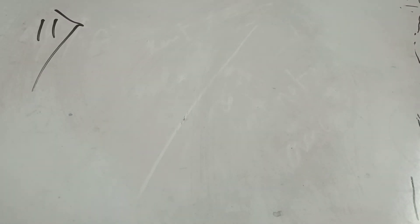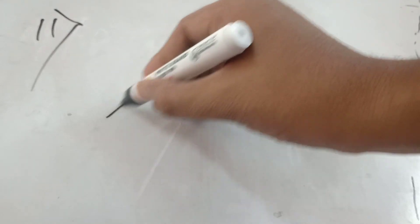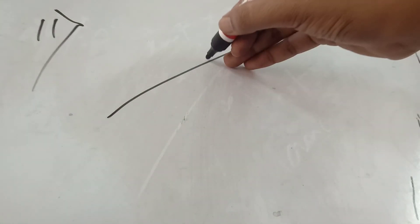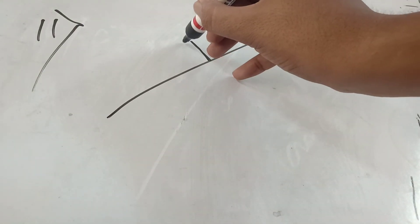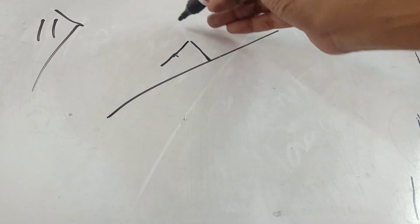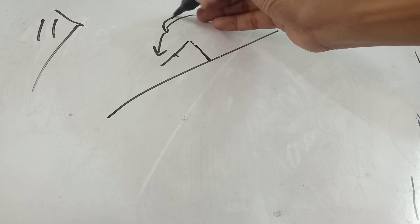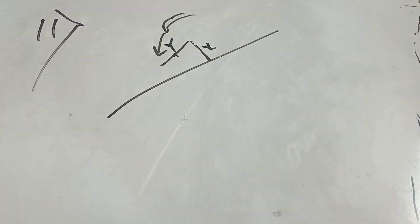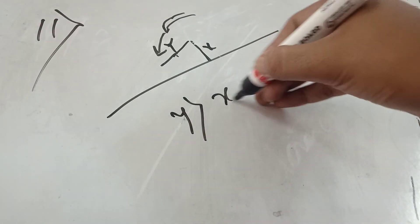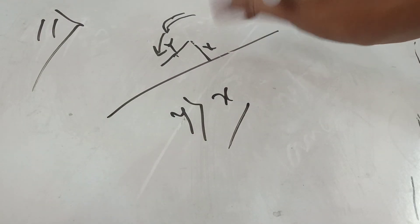Eleventh principle: the suture should be placed at a greater depth than the distance from the incision line, so as to evert the wound margin. That means if you are taking a bite at distance X from the incision line, the depth Y of the suture should be more than X. The depth of the suture will be more than the distance from the incision line.